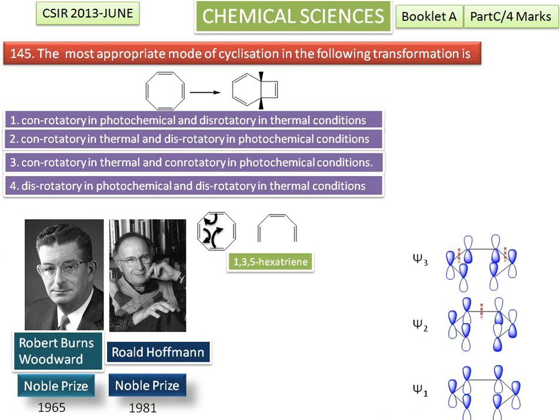The next higher one is Ψ4, which has 3 nodes. The next higher one is Ψ5, which has 4 nodes.